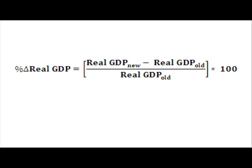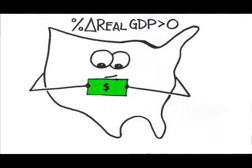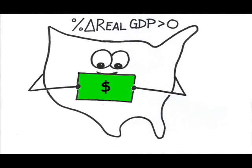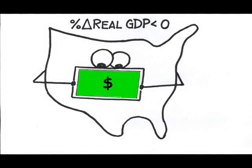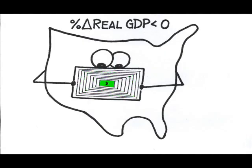If the percentage change in real GDP is greater than zero, the economy is growing. If the percentage change in real GDP is less than zero, the economy is shrinking. How we classify a decline in the economy is a question of duration. If real GDP declines for two consecutive quarters — that's six months — we have a recession. If real GDP declines for eight consecutive quarters — two years — we have a depression.